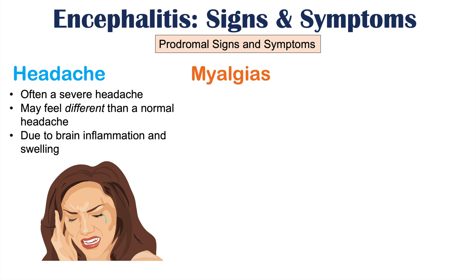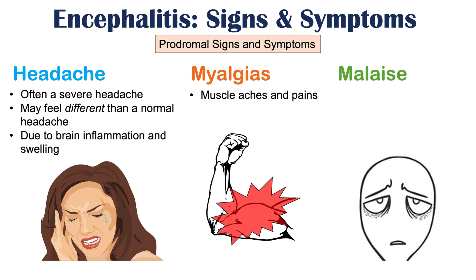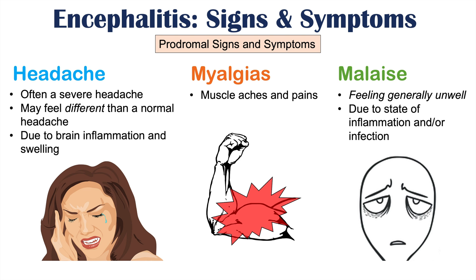Myalgias are another prodromal symptom of encephalitis — these are muscle aches and pains. Malaise is also another early symptom; it is a sensation of feeling generally unwell. If there is an infection of brain tissue and some brain swelling, the patient will feel very unwell due to the state of inflammation and/or infection.